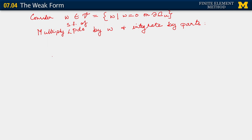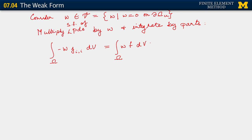Let's do it in steps. First, let's multiply the PDE and integrate it over the volume, then we'll invoke integration by parts. Multiplying by w and integrating over the volume, we have the integral over omega of minus w times J_i comma i dV — we took the minus divergence on the left-hand side and multiplied it by w — and this equals the integral over omega of w times f dV.